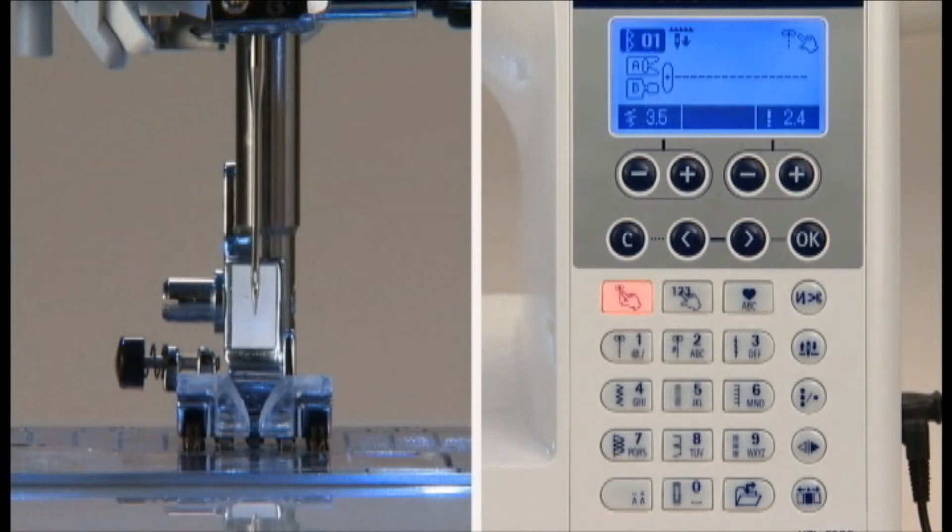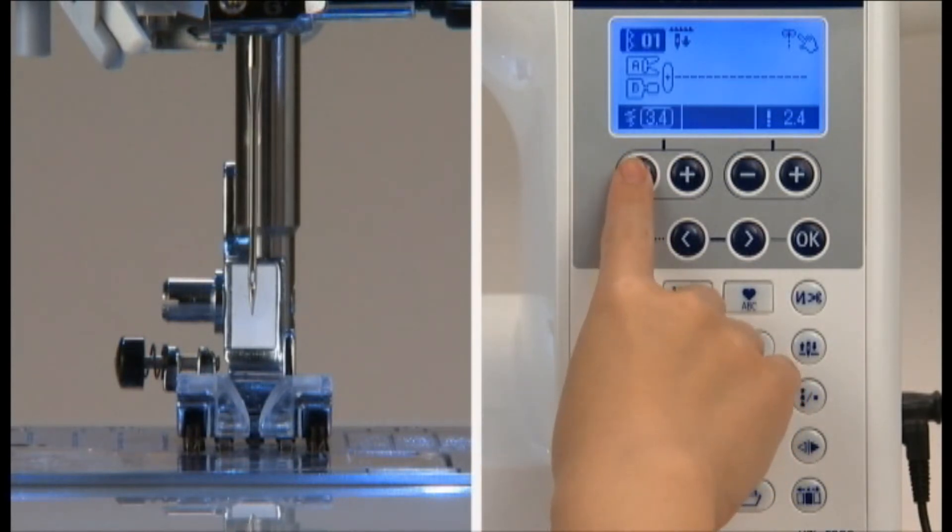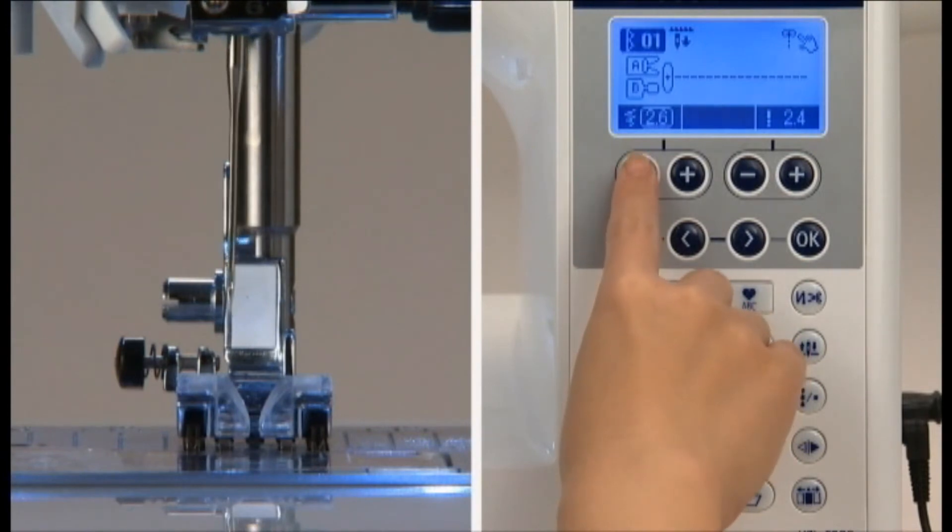You can change the needle position of straight stitch by using the stitch width adjusting button located below the LCD screen. Pushing minus, the needle moves to the left.